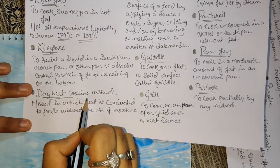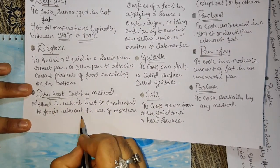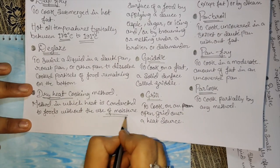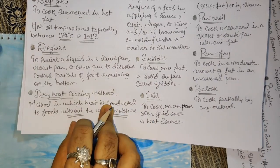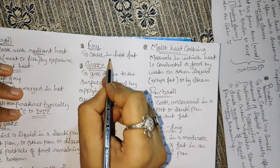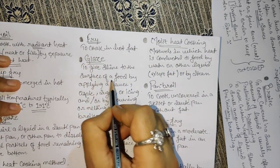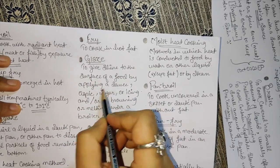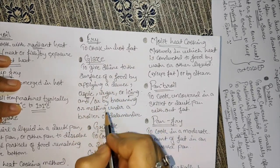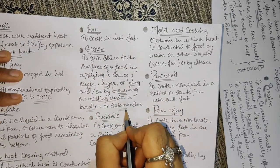Dry heat cooking method - method in which heat is conducted without using moisture. Fry - to cook in hot fat. Glaze - to give shine to the surface of food by applying sauce, aspic, sugar, or icing, and about the browning, then melting under a broiler or salamander.